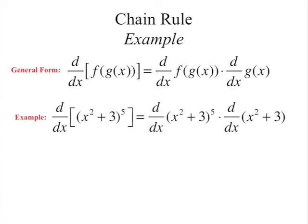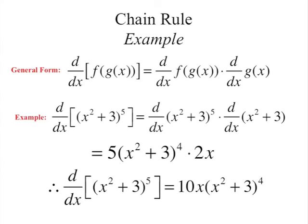For example, differentiating (x squared plus 3) all raised to the 5: take the derivative of the outside using the power rule — bring the 5 down and drop the exponent to 4, giving 5 times (x squared plus 3) to the 4. Then multiply by the derivative of the inside, which is 2x. So the result is 10x times (x squared plus 3) to the 4.